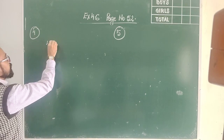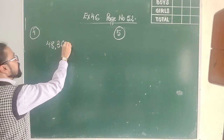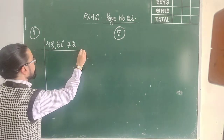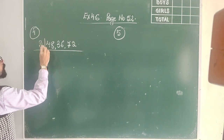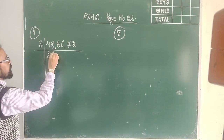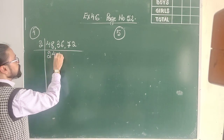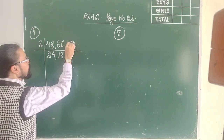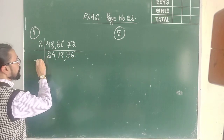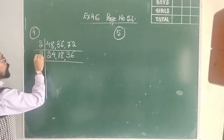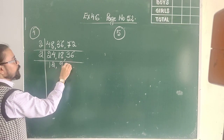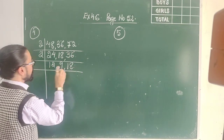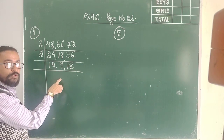So I take 48, 36 and 72 together and find the LCM. Dividing by 2: 2 twos are 4, 2 fours are 8, 2 ones are 2. Again by 2: 2 eights are 16, 2 threes are 6. Again by 2: 2 sixes are 12. Remember, 12 and 18 are still divisible by 2, but 9 is not divisible by 2.